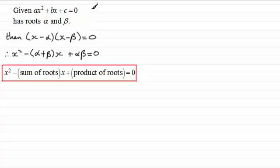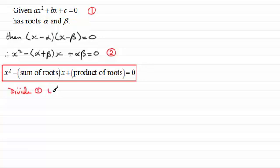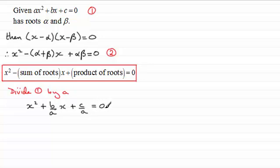Numbering the first quadratic equation as (1) and this one as (2), if we divide equation (1) through by a, we get x² + (b/a)x + c/a = 0.